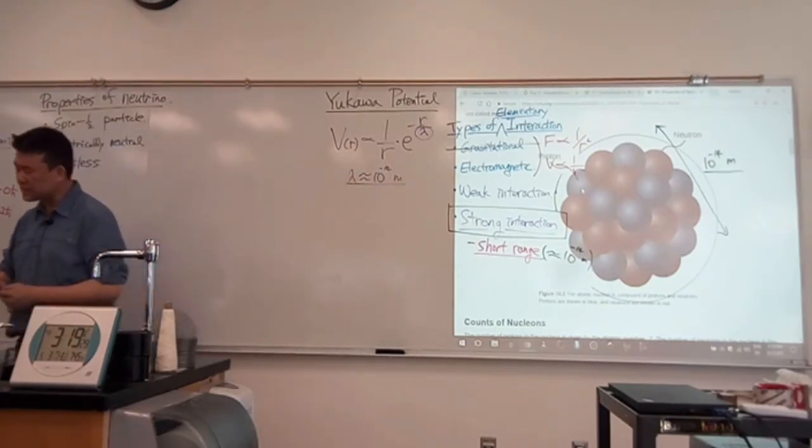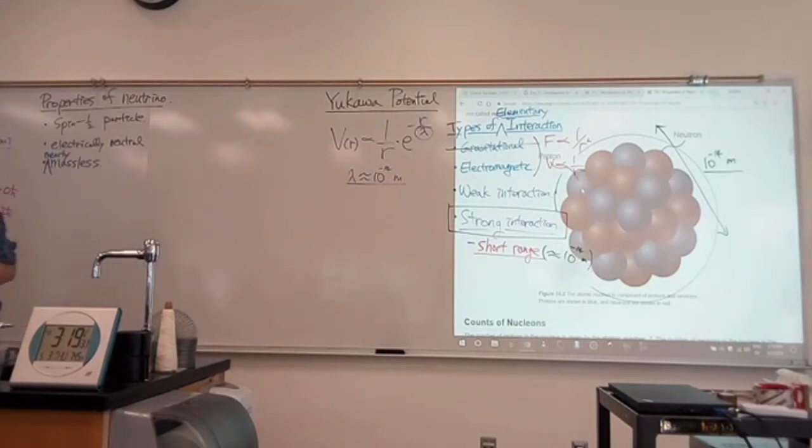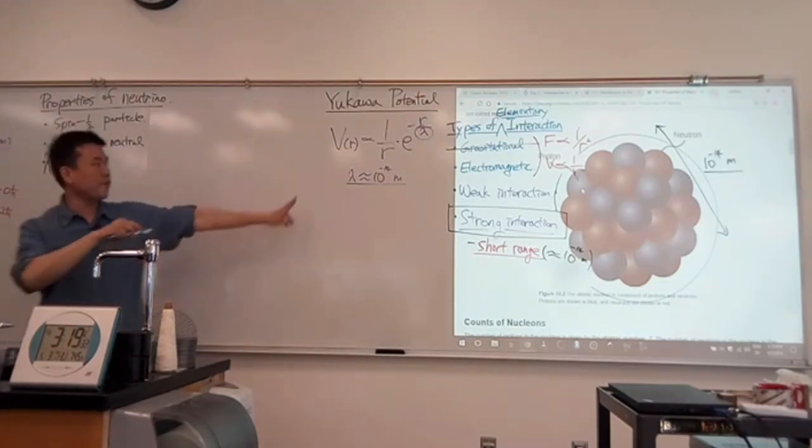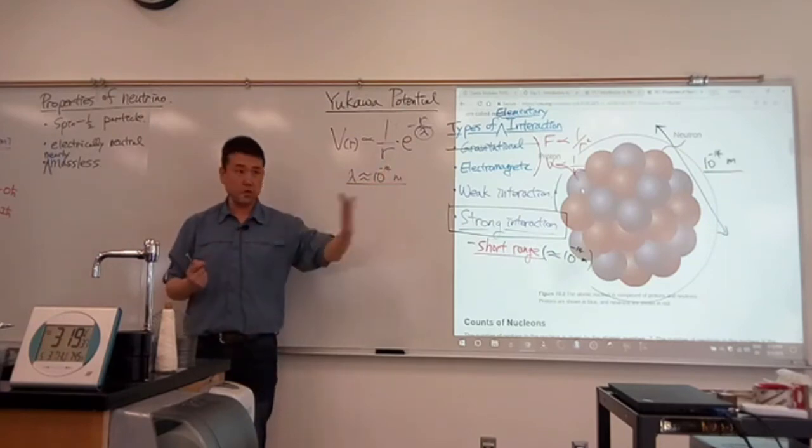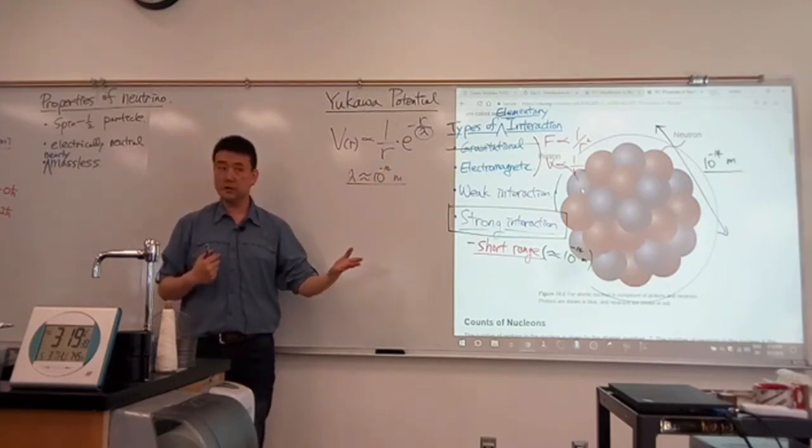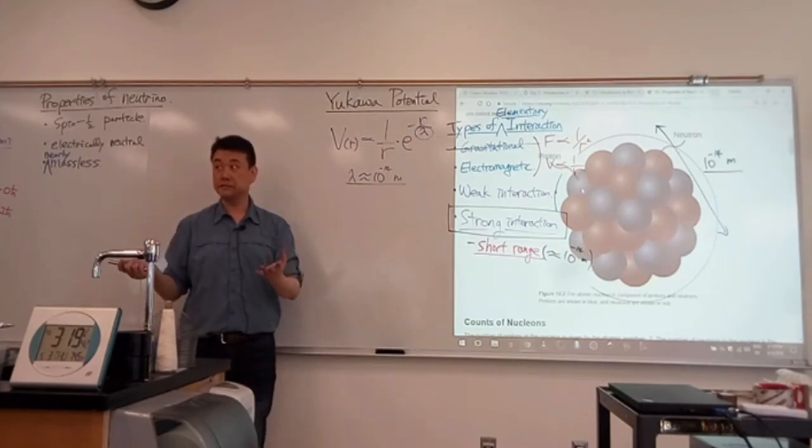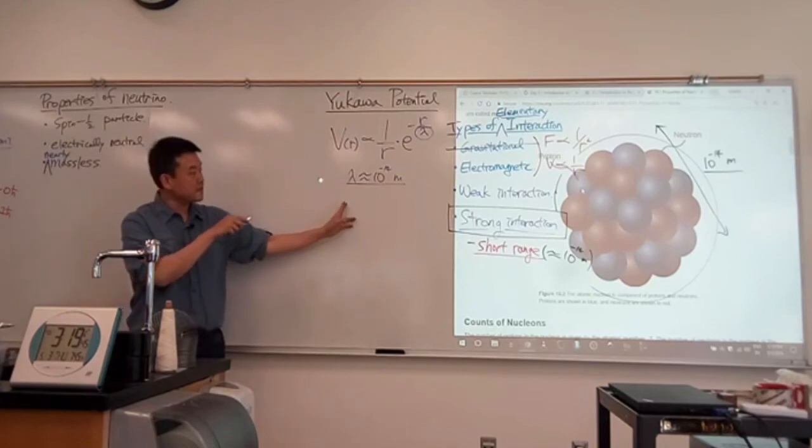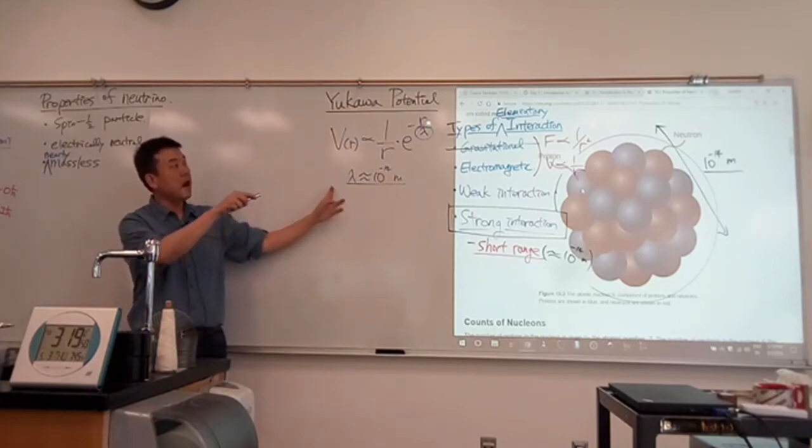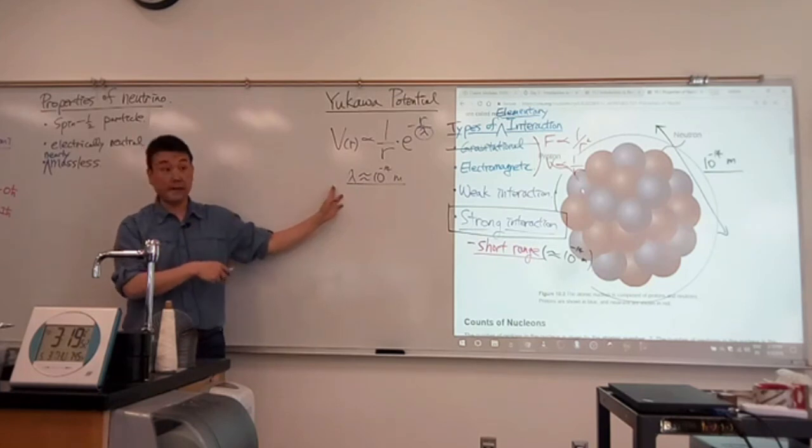And is it kind of intuitively obvious that if the potential is modified by multiplying by this, that would limit the range of your potential? Yes? Kind of? I guess we can just leave that there. And that this is the characteristic length that determines how quickly this exponential is decaying.